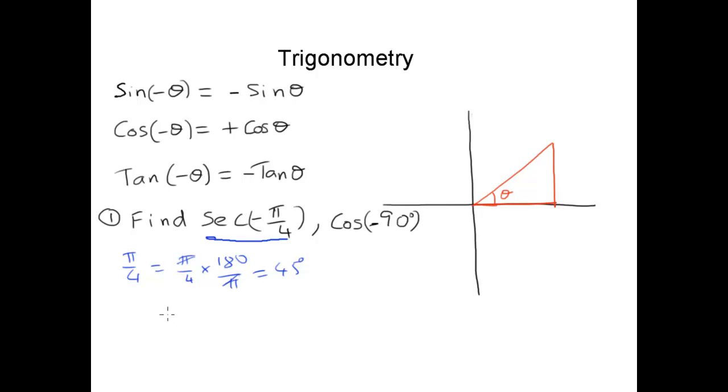So what is secant minus 45 degrees? Secant minus 45 is positive secant 45. Right. Because your cos of minus is positive, so secant also will be positive. What is secant 45? It is 1 over cos 45 degrees. Right. And how much is cos 45? Cos 45 is root 2 over 2. So your secant 45 will be 2 over root 2 or this is equal to root 2.